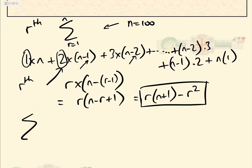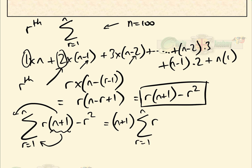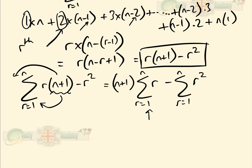Now we sum that from r=1 to n: the sum of r(n+1) − r². Since n+1 is a constant in this summation, we can take it out, giving (n+1) × Σr − Σr². These two are well-known standard results: the sum of the first n numbers and the sum of the first n squares.